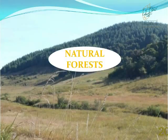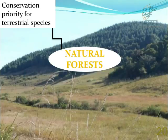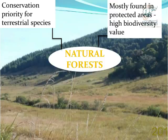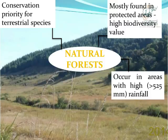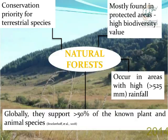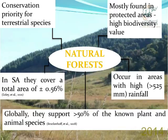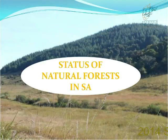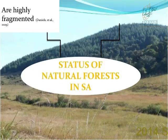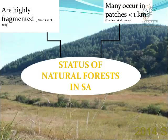Why are natural forests so important? Natural forests are considered a conservation priority for many terrestrial plant and animal species and have high biodiversity value. As a result, many of them are found within protected areas. Natural forests occur in areas with high rainfall and globally support more than 50% of the non-terrestrial plants and animal species. However, in our country they cover a very small area of approximately 0.56%, are highly fragmented, and many occur in patches less than one kilometer square.